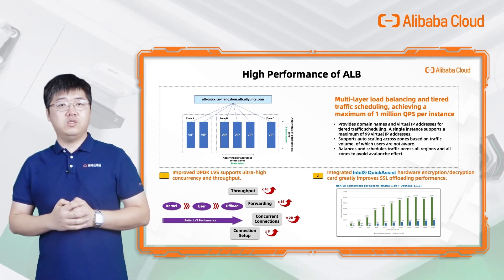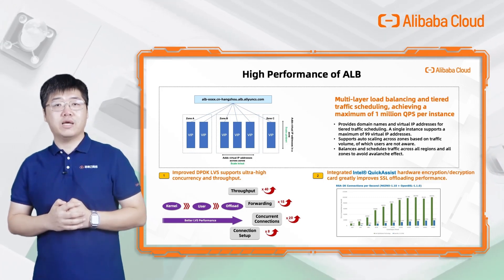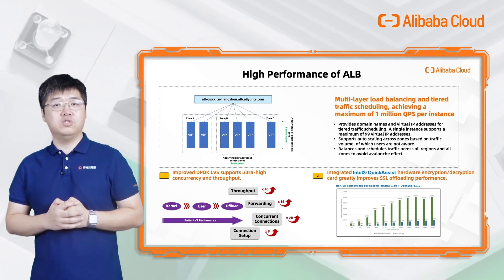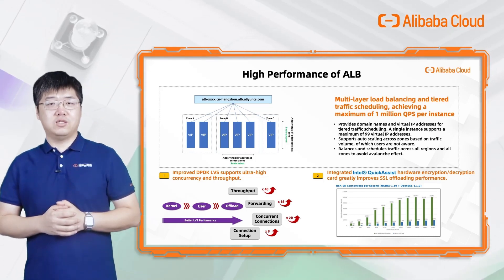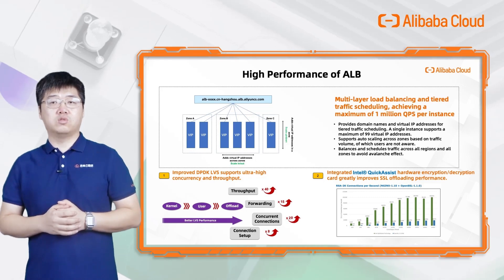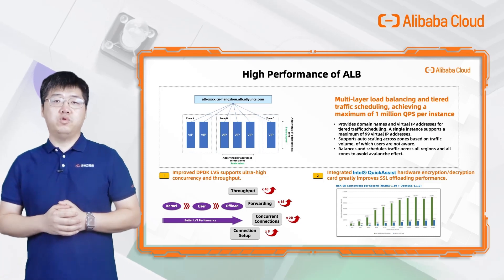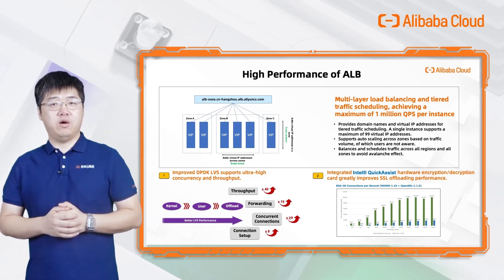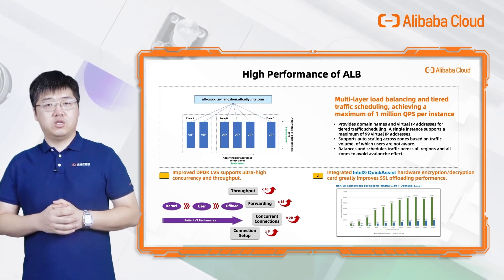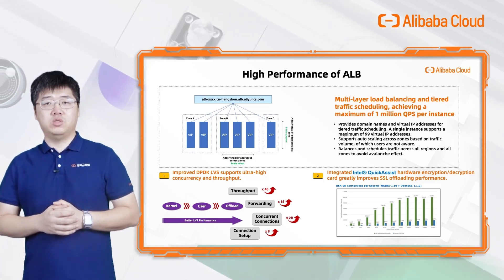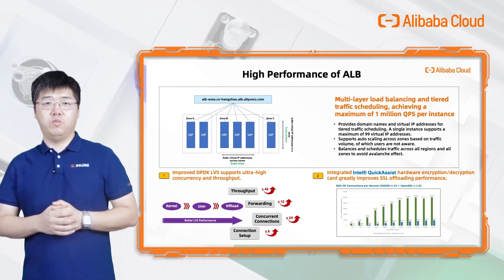In terms of performance, ALB provides domain name and virtual IP address support; a single instance supports a maximum of 99 virtual IP addresses and achieves a maximum of 1 million QPS per instance. With its tiered traffic scheduling policy, ALB balances and schedules traffic across all regions and zones to avoid the avalanche effect. With improved DPDK LVS, ALB supports ultra-high concurrency and throughput, and integrates a dedicated hardware encryption/decryption card to greatly improve SSL offloading performance.